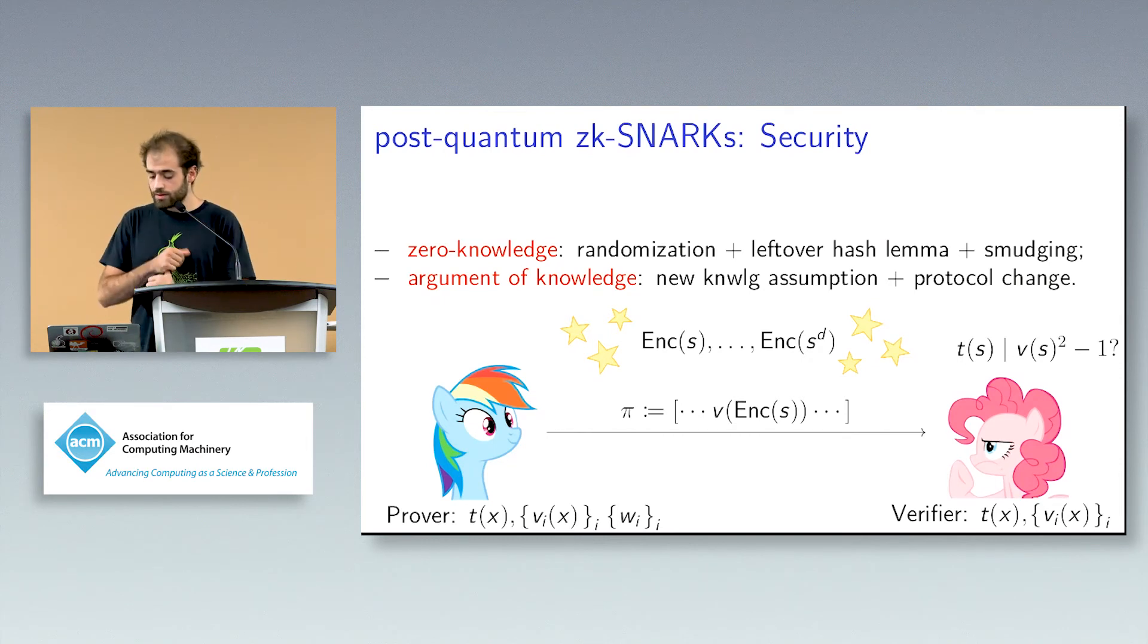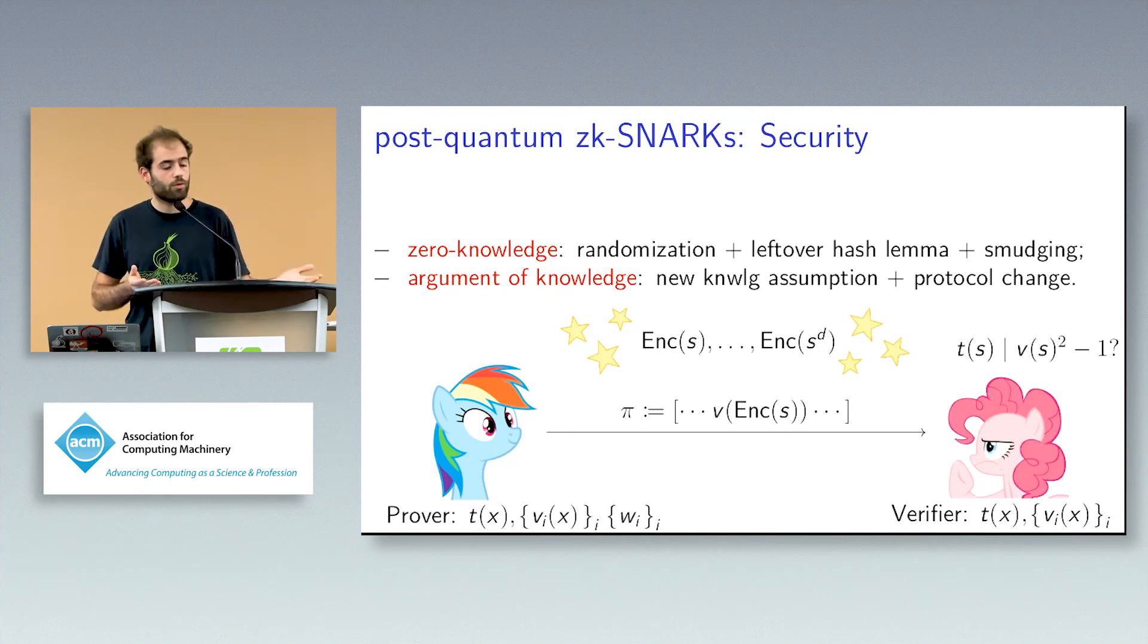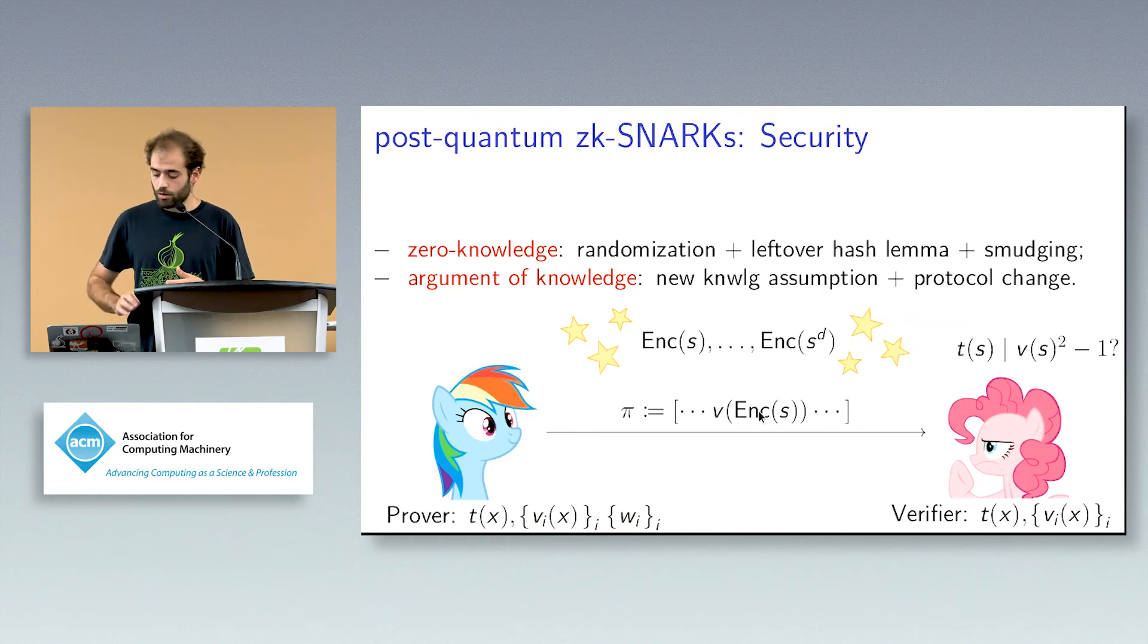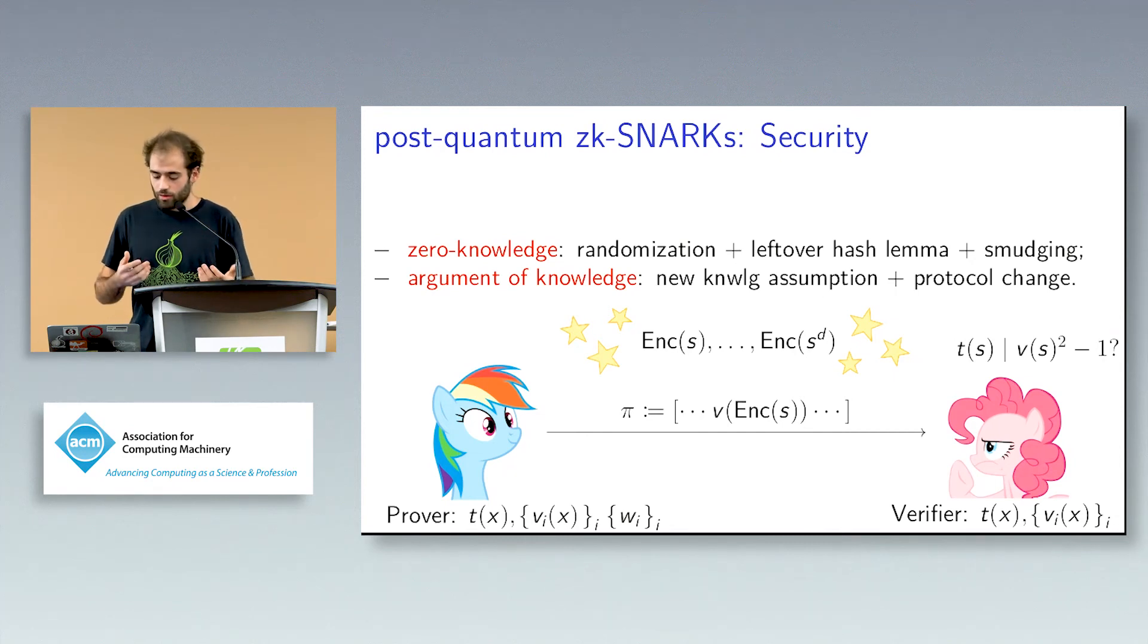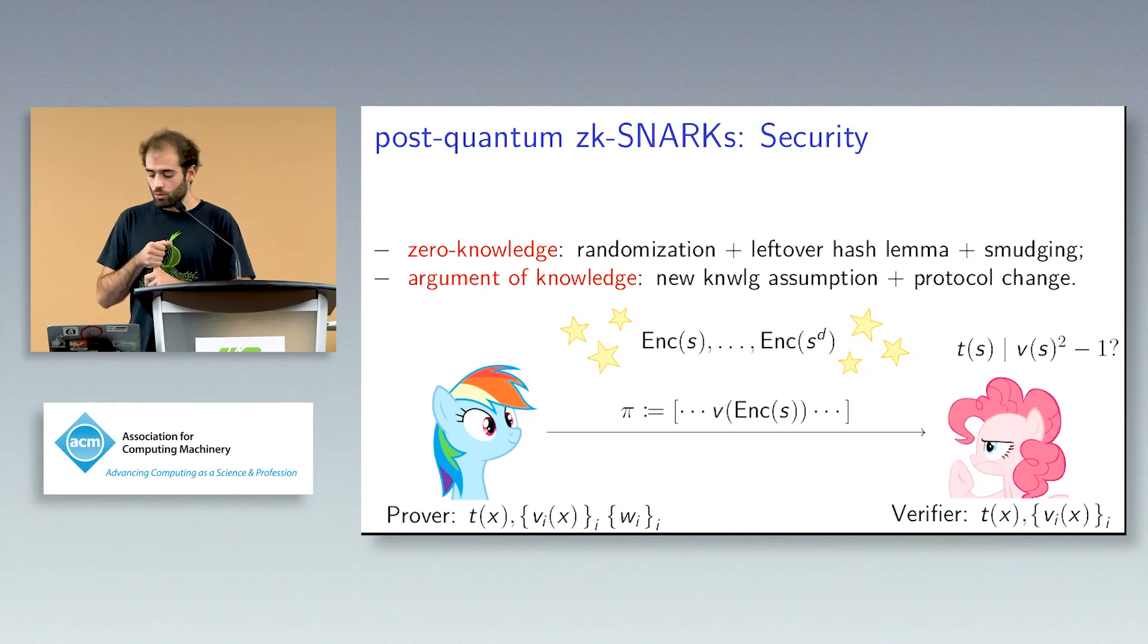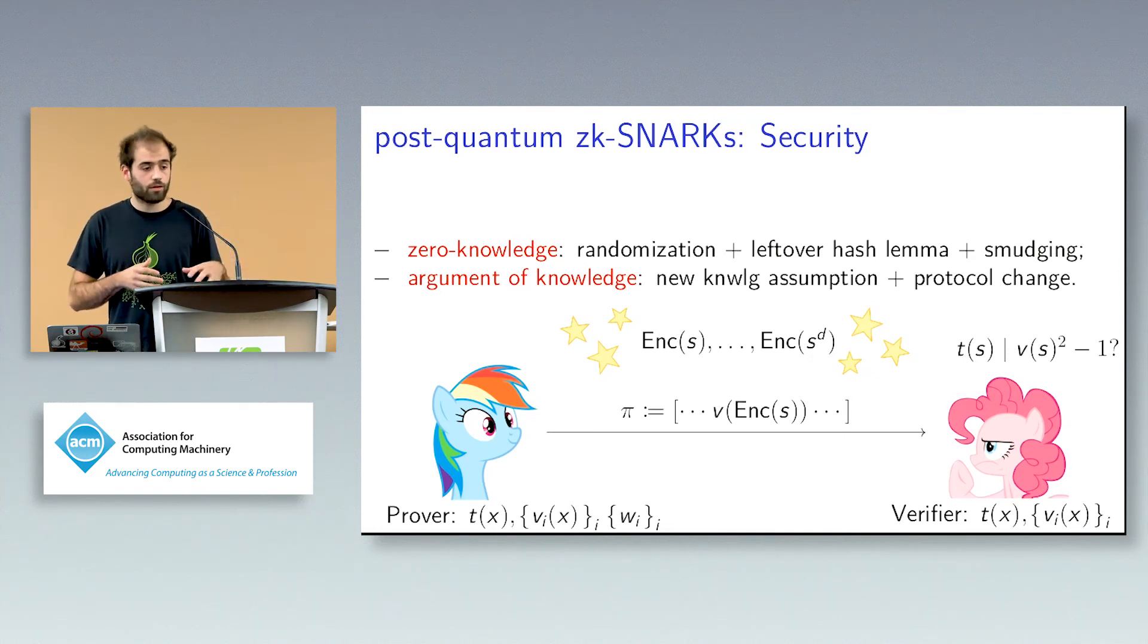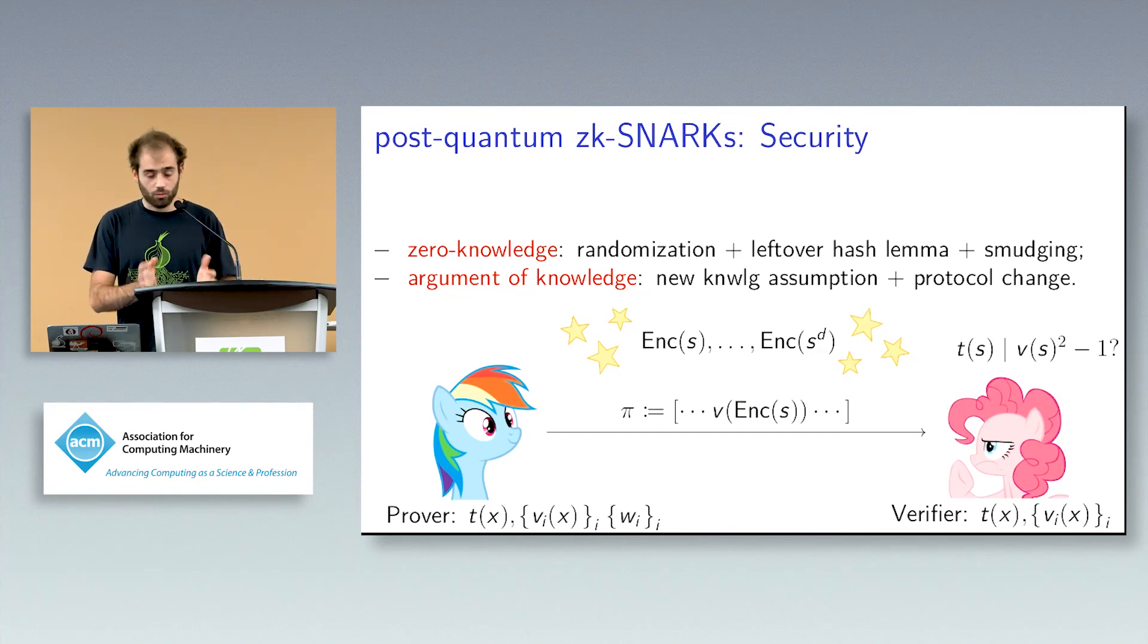More precisely, why is this secure? This is zero knowledge because we can again randomize the polynomial, but we cannot stop there because we have, for example, a random vector and an error, which depend on the linear combination that we did to evaluate this polynomial v. So we use leftover hash lemma, which you should know everything about if you follow last talk, for the random vector to show that the random vector do not leak information and smudging to sort of hide the linear combination relationship that was really given inside the error.